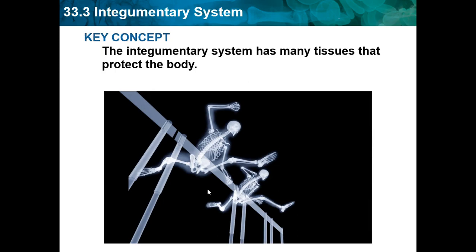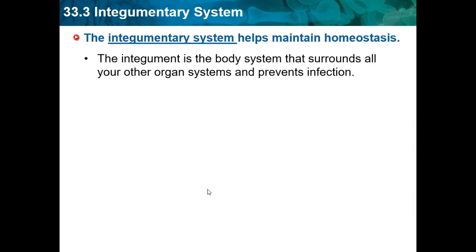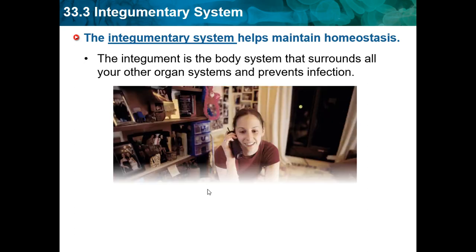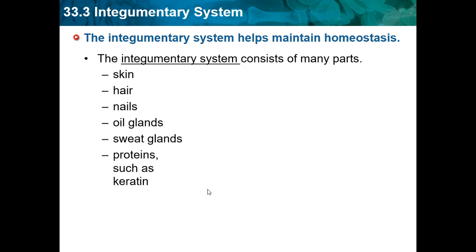Section 33.3 covers the integumentary system. The integumentary system has many tissues that protect the body and helps maintain homeostasis. It is the body system that surrounds all your other organ systems and prevents infection. It consists of many parts: the skin, hair, nails, oil glands, sweat glands, and proteins such as keratin.